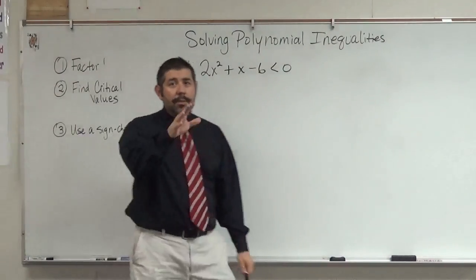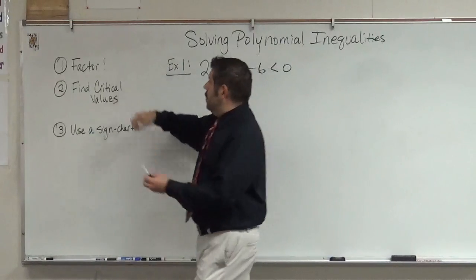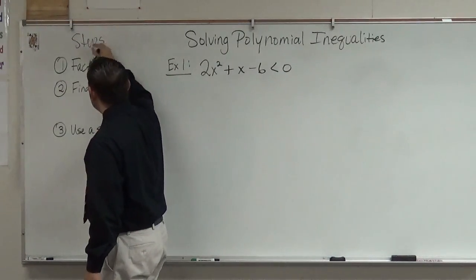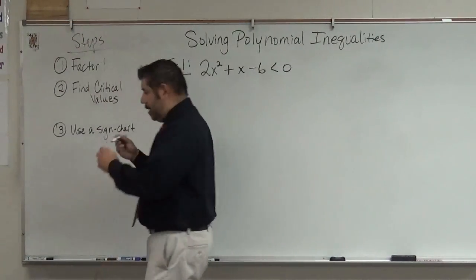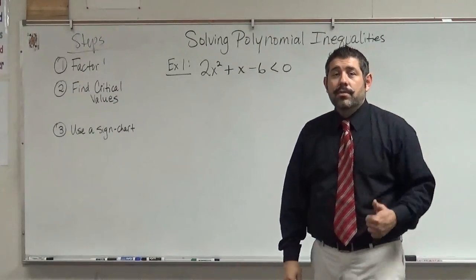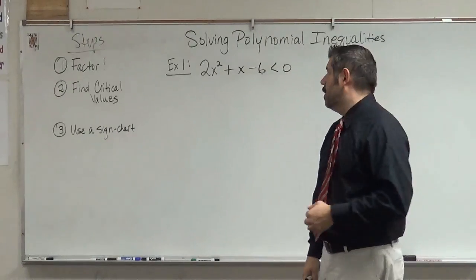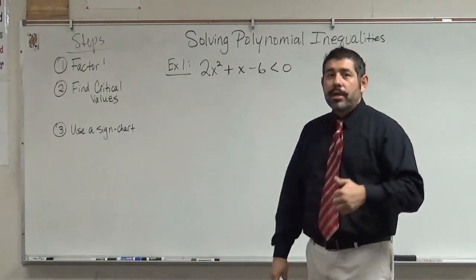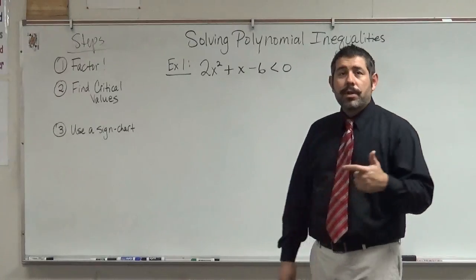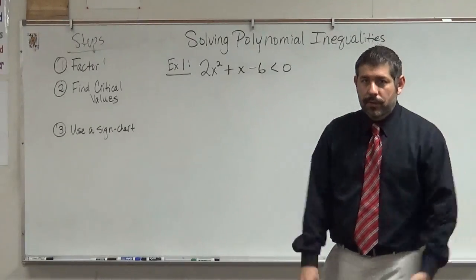Let's take a look. There are three steps to doing a polynomial inequality. We want to factor it, so we've got to have it in factored form. We're going to find what we call the critical values, and then we're going to use a sign chart, and then we're going to put it in interval notation.